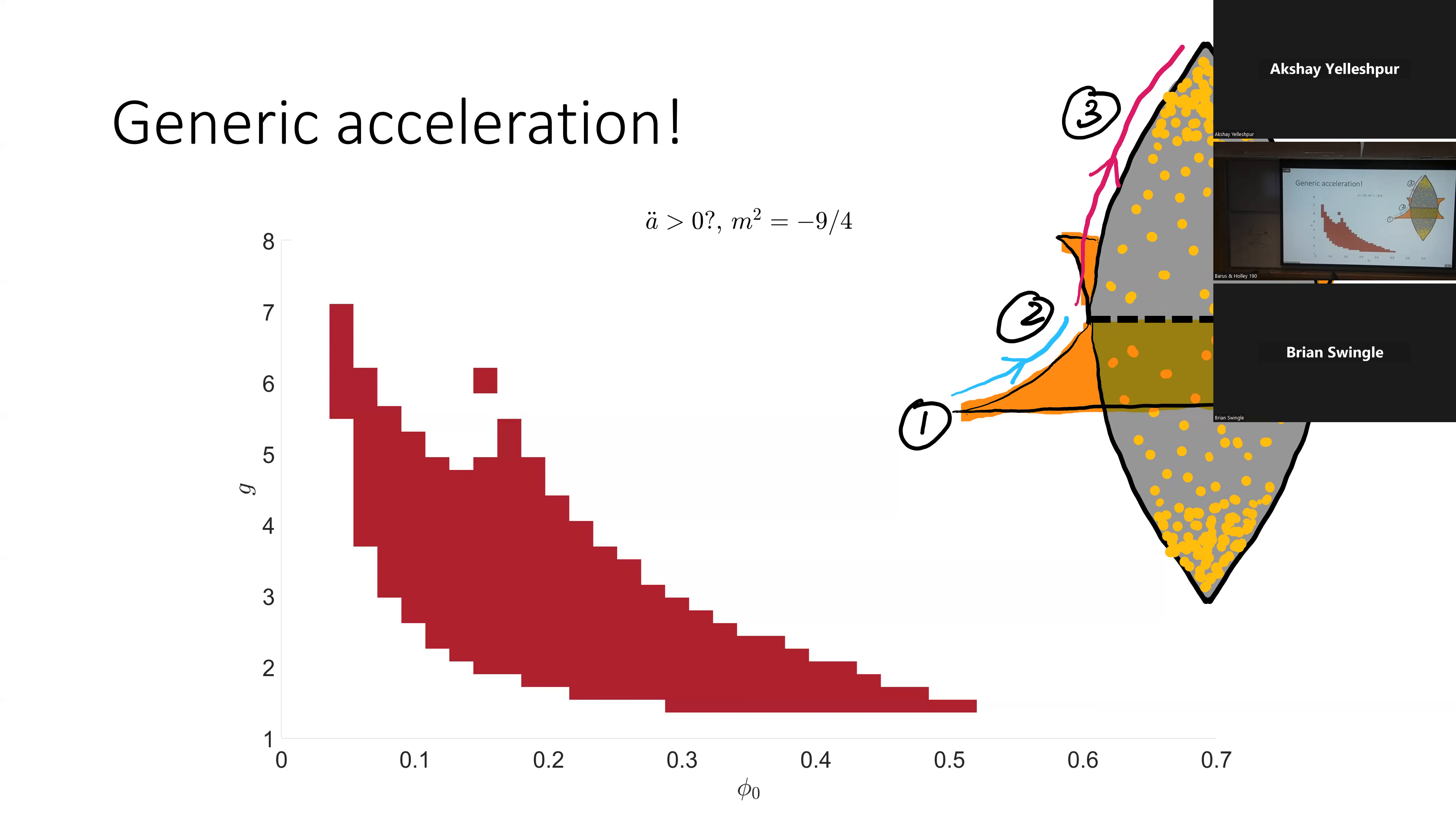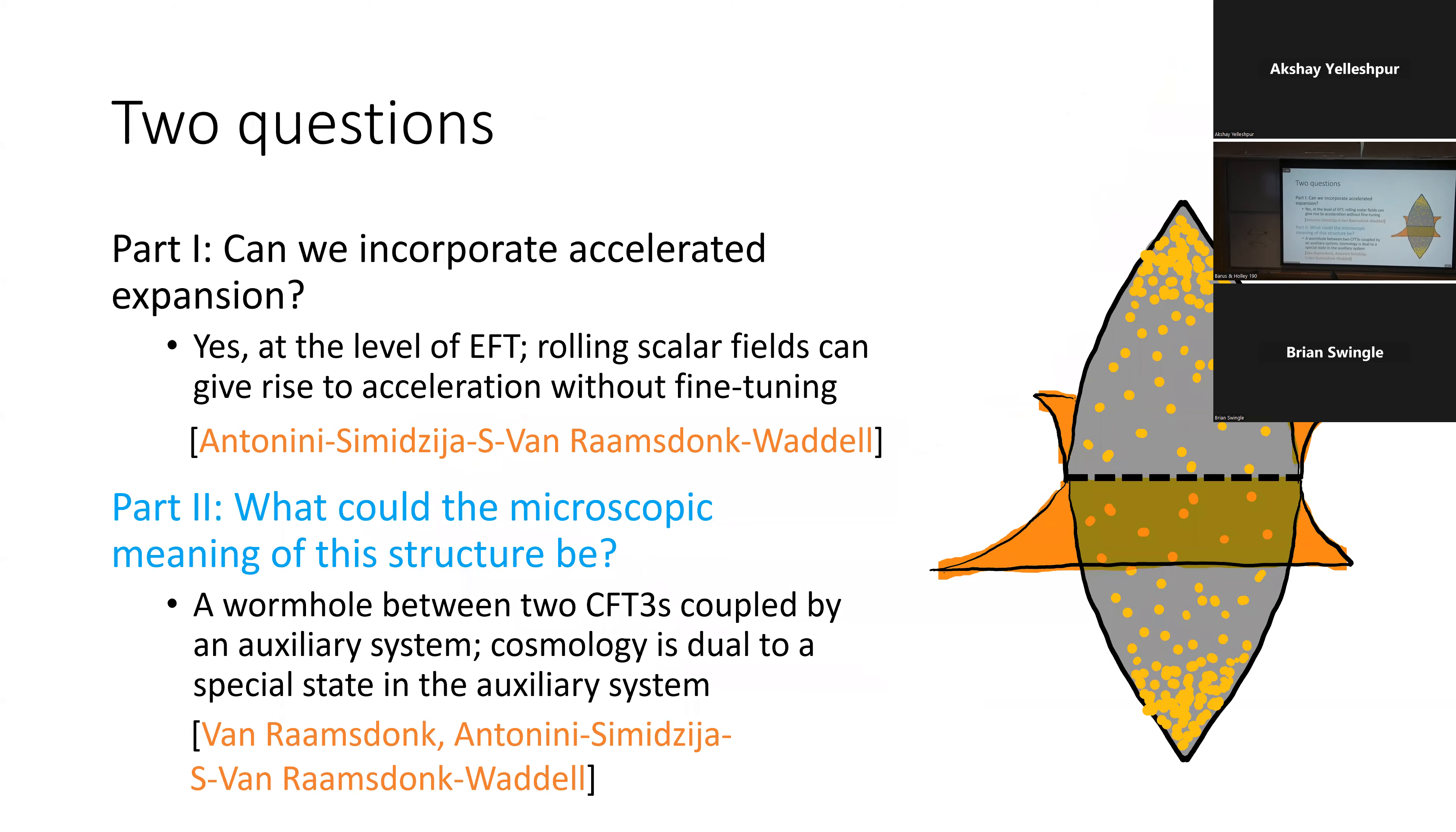So the claim is that if you had this kind of setup for a generic CFT with relevant perturbations, you would expect generically to have this accelerated period. And then we showed in one of the papers, not surprisingly, if you sort of fine tune the potential, you can match the scale factor of lambda CDM to sort of whatever degree you like, more or less, while being consistent with the wormhole solution. Those potentials might be bad for various reasons, they might be in swampland, I don't know. That's a harder question. But at least the tunability is there at the effective field theory level.